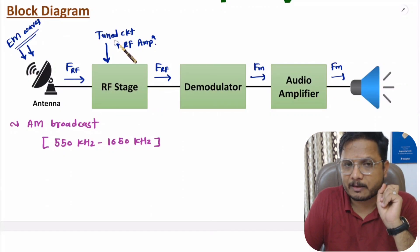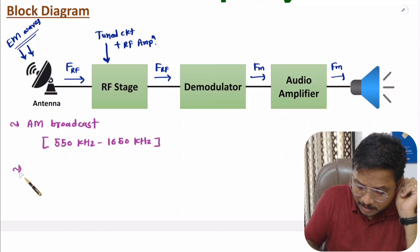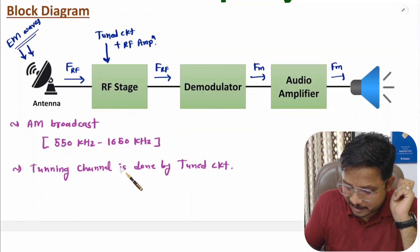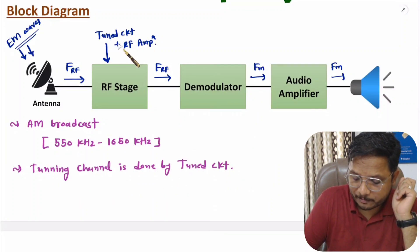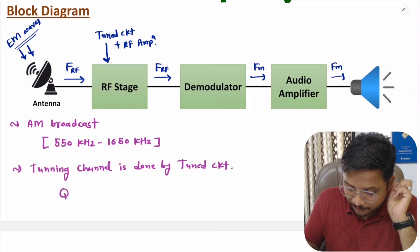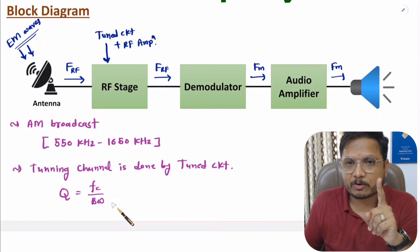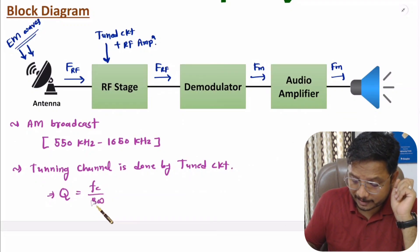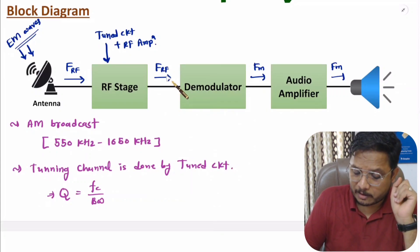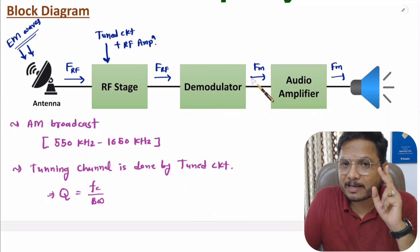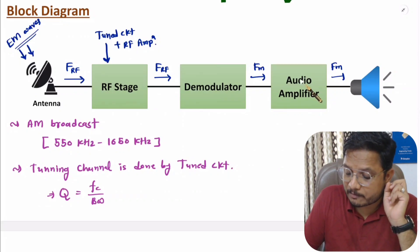In your radio, you listen to only one channel at a time. That tuning is done with the use of a tuned circuit — the tuned circuit tunes a particular channel. The quality of tuning depends on the quality factor, which is center frequency divided by bandwidth. Based on the quality factor, we will receive one channel only, having only the RF frequency.